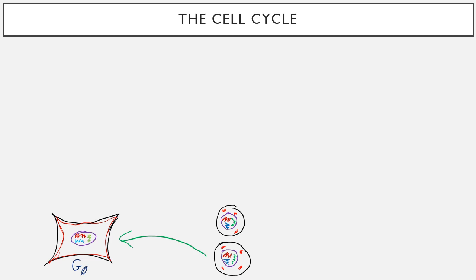This cell is now said to be in a stage of the cell cycle known as G0, for zero growth. It doesn't mean that it's not growing, the cell could actually get bigger, but it is not currently growing in the sense of increasing the number of cells in the body. It's not dividing anymore.